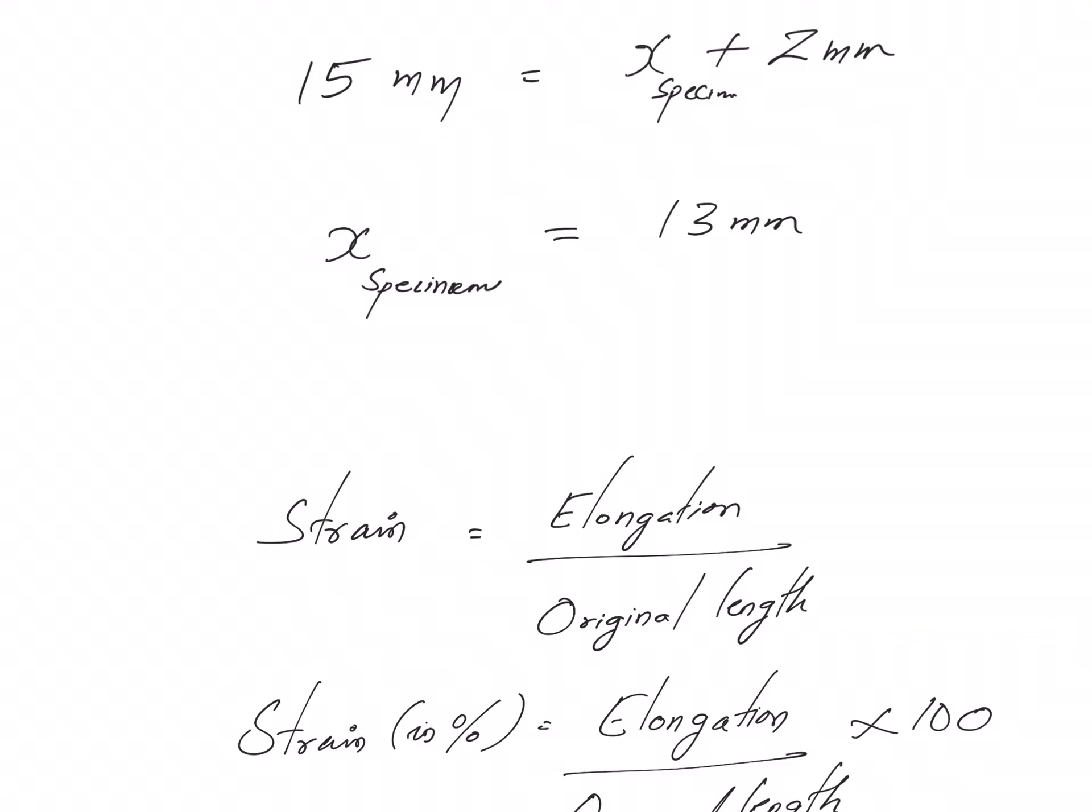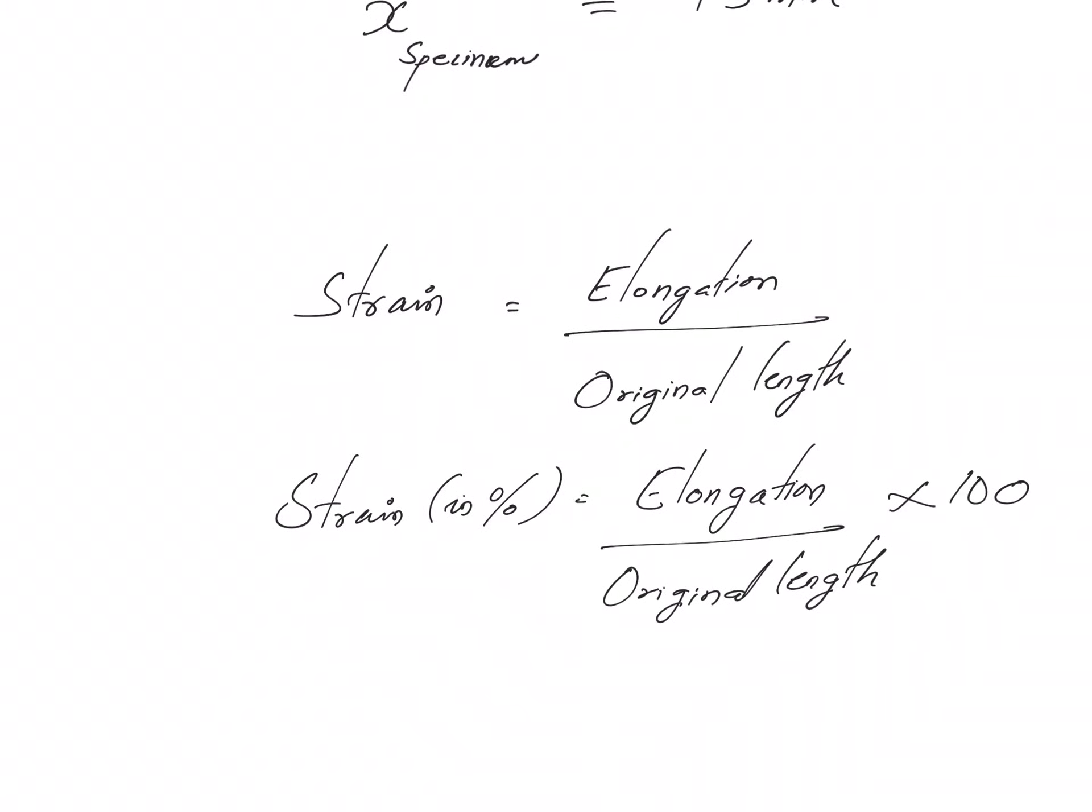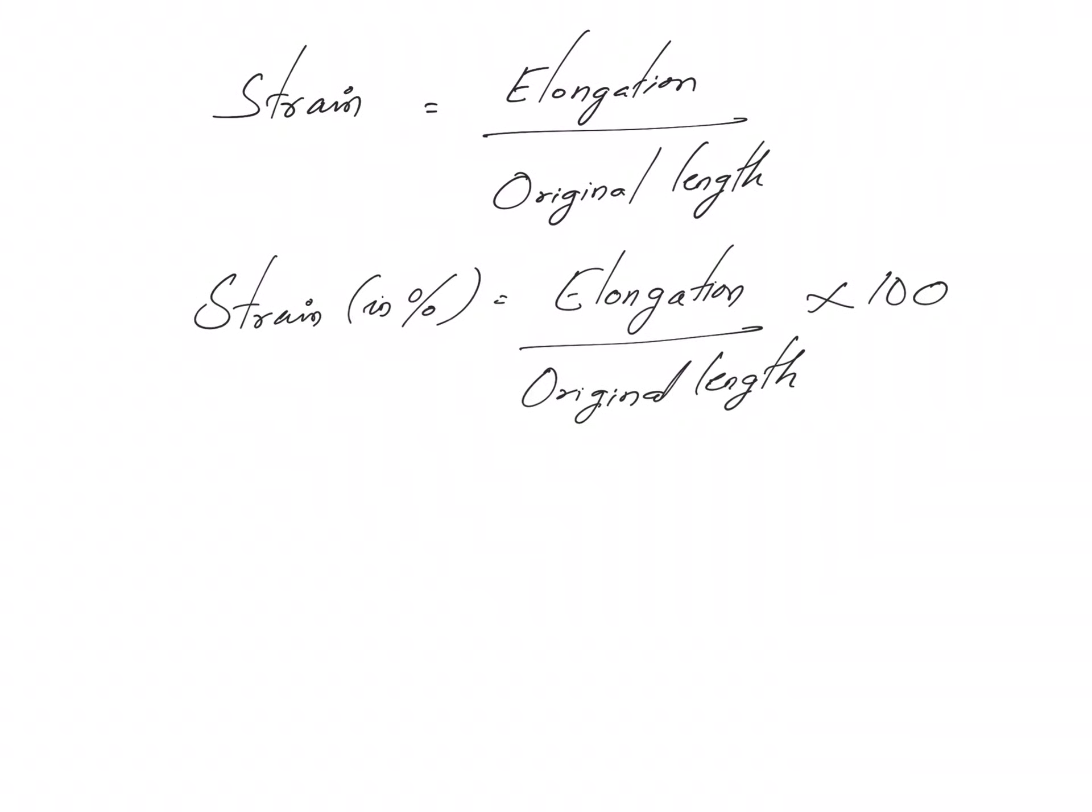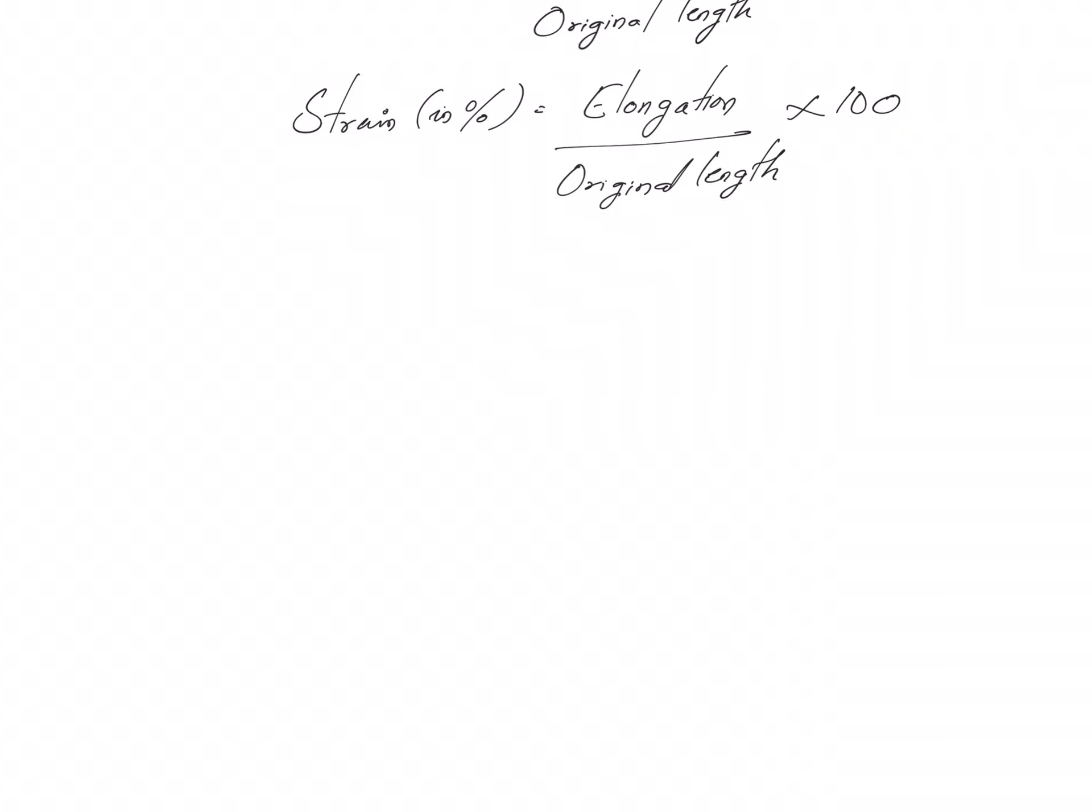So the deformation felt by the specimen amounts to something like 13 mm. So here I'm not computing true strain, I'm computing engineering strain only. Engineering strain is defined as elongation divided by original length. So strain in percentage can be evaluated as given here: elongation divided by original length multiplied by 100.